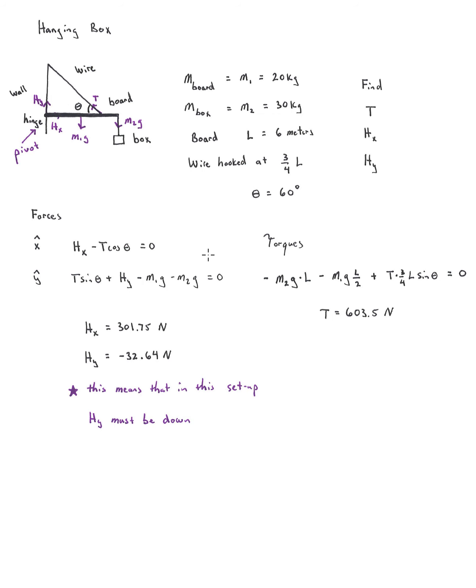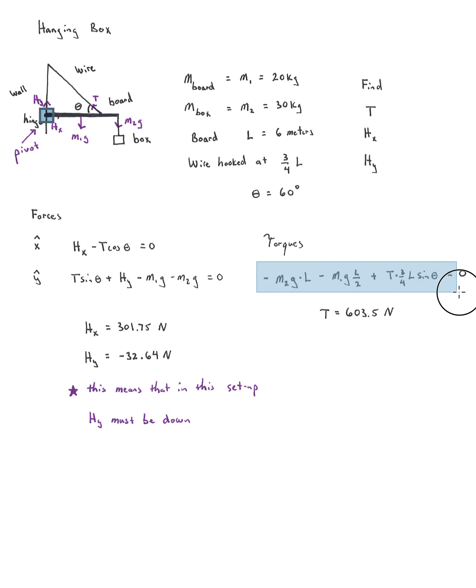So we have to write a torque equation. I'm going to place the pivot at the hinge, which gives us three things causing torques. Remember, HY and HX will not cause a torque because torques are force times lever arm times the sine of the angle between them — and since HY and HX act at the hinge itself, they have no lever arm and won't appear in the torque equation.